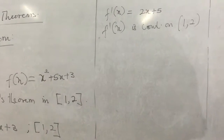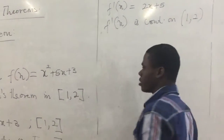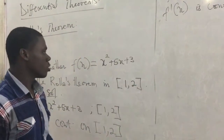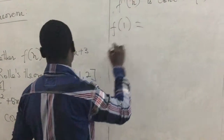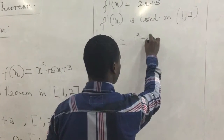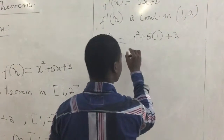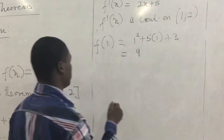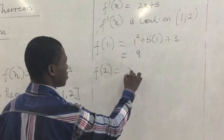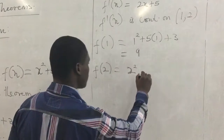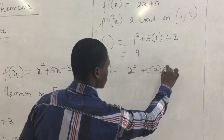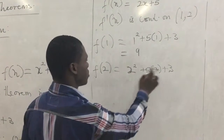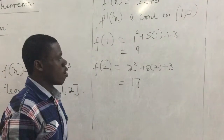The next thing to check, as far as the theory is concerned, is whether the function value at 1 is the same as the function value at 2. So f(1): we substitute 1 for x, giving 1 + 5 + 3 = 9. Then f(2): we substitute 2, giving 4 + 10 + 3 = 17.